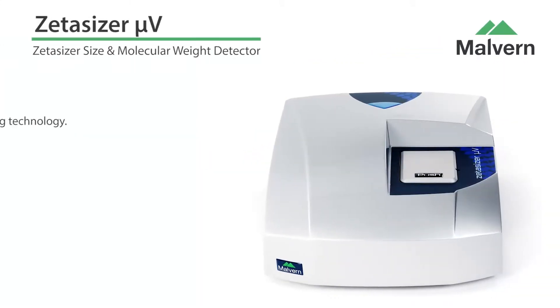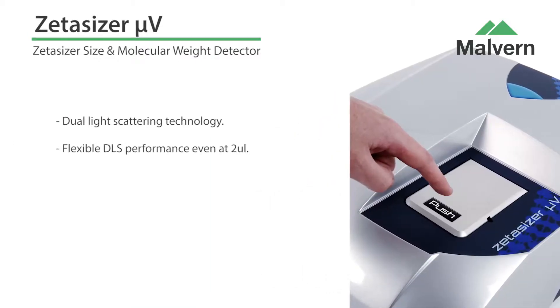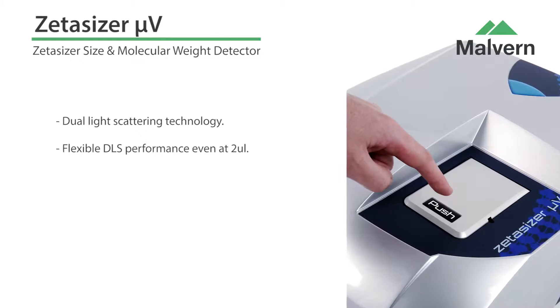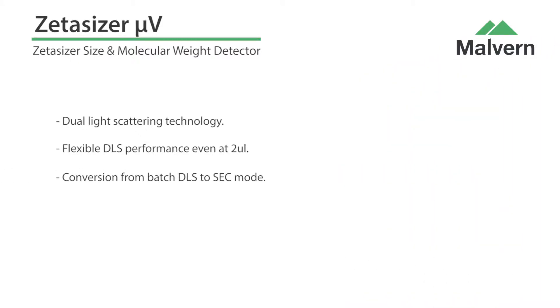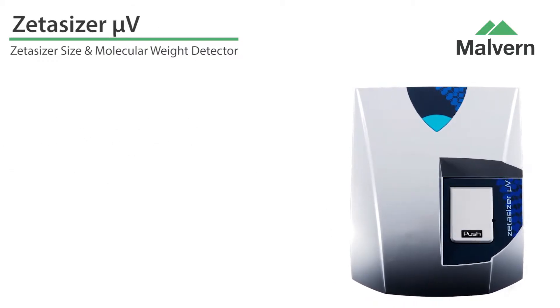The Zetasizer Micro V is a dual-purpose light scattering instrument designed specifically for the analysis of proteins. Firstly, it is a highly sensitive cuvette-based dynamic light scattering instrument with the same great performance as the market-leading Zetasizer Nano.